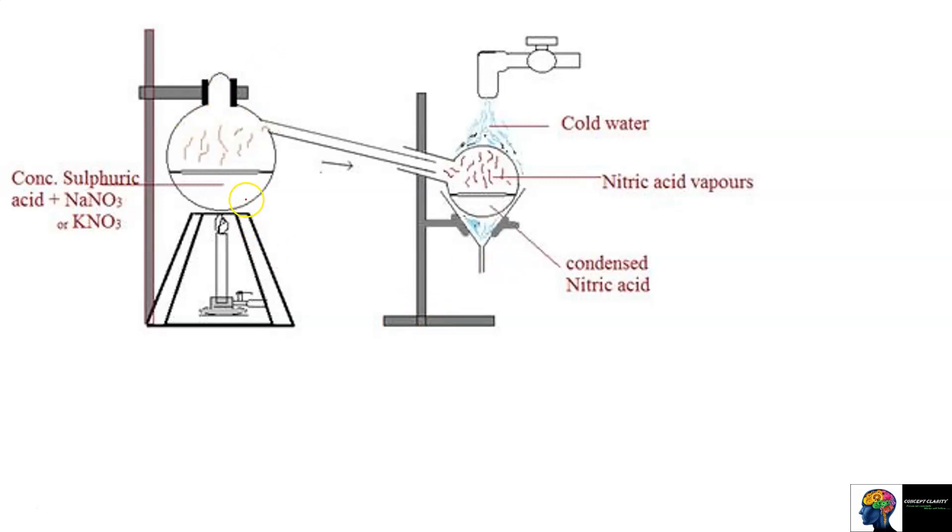This is your flask stand. You can see that the laboratory apparatus has concentrated sulfuric acid as well as potassium nitrate or sodium nitrate. You can add either reactant. We will put it on the flask and put it in the heat to provide heating.